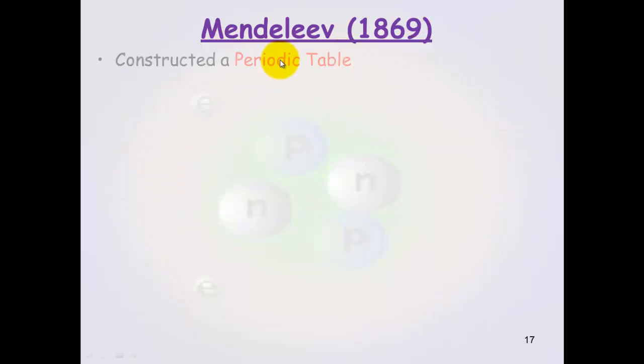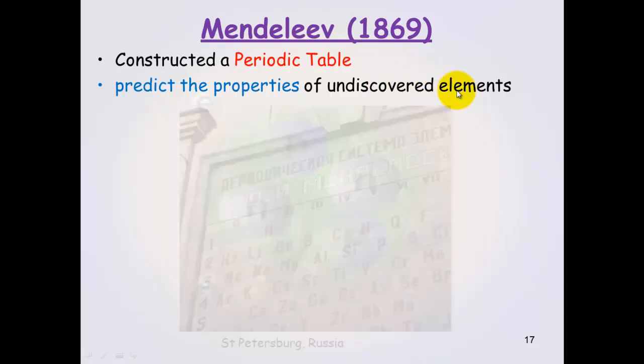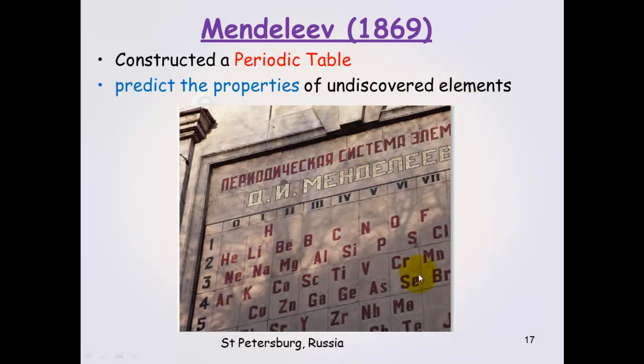Enter Mendeleev who constructed a periodic table. And we can almost say he constructed THE periodic table, which is how we know it today. But the most amazing thing was that Mendeleev was able to predict the properties of elements that had yet been discovered. And this is a table of the periodic table, which is pretty similar to what we can see today. And this is in St. Petersburg in Russia.